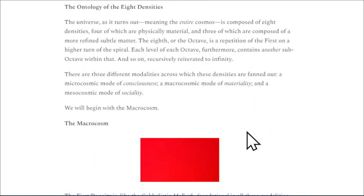The Ontology of the Eight Densities: the universe — meaning the entire cosmos — is composed of eight densities, four of which are physically material and three of which are composed of a more refined subtle matter. The eighth, or the octave, is a repetition of the first on a higher turn of the spiral. Each level of each octave furthermore contains another sub-octave within that, and so on, recursively reiterated to infinity. There are three different modalities across which these densities are fanned out: a microcosmic mode of consciousness, a macrocosmic mode of materiality, and a mesocosmic mode of sociality.